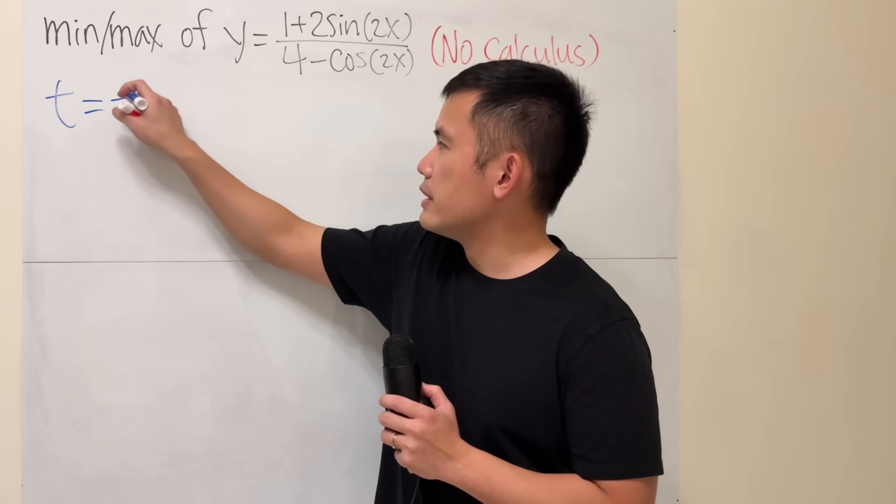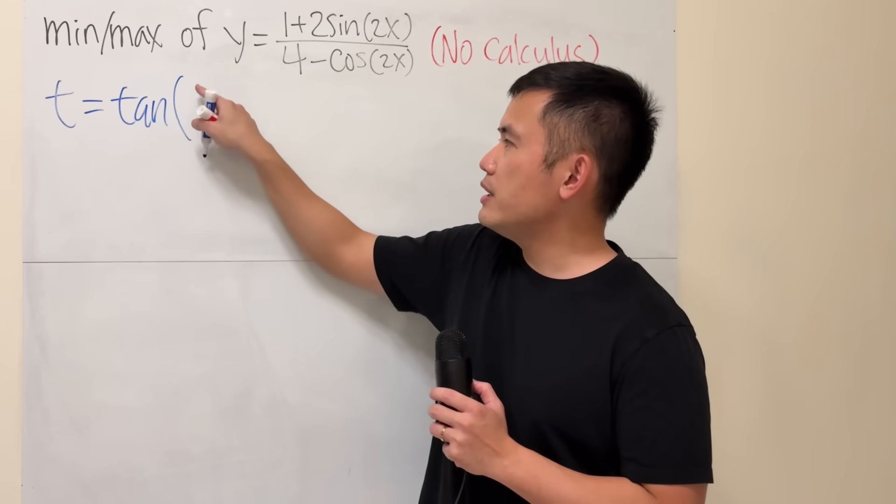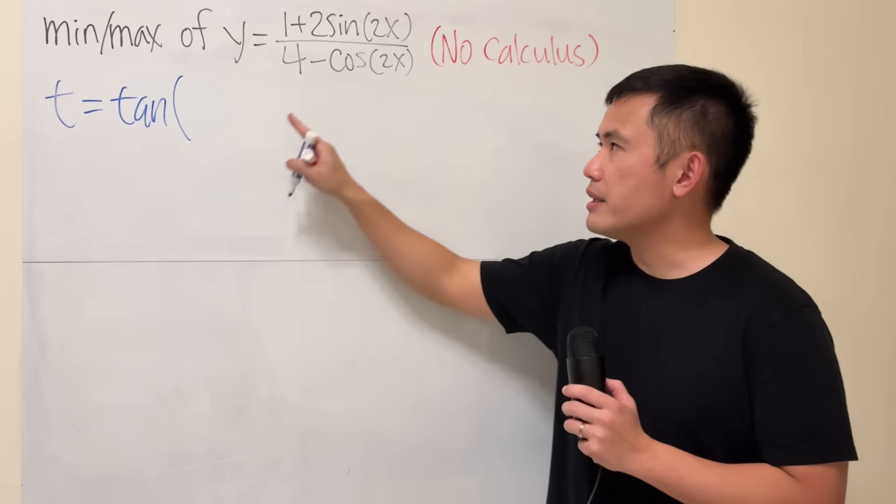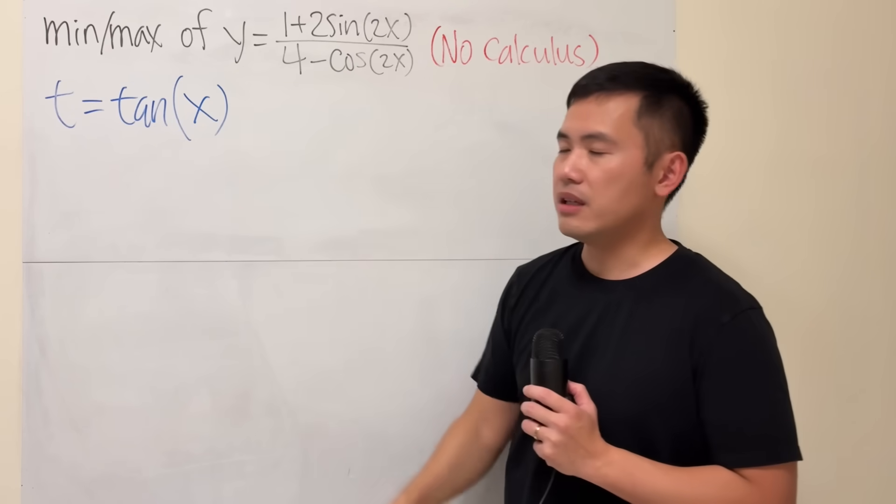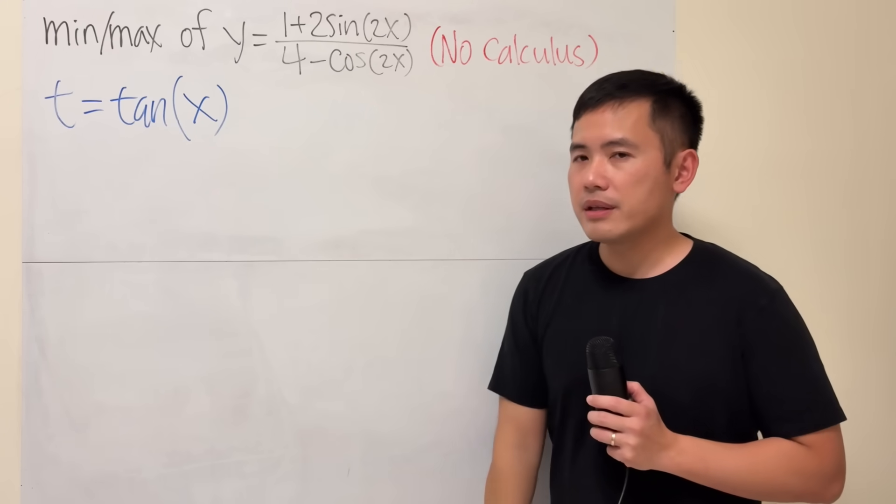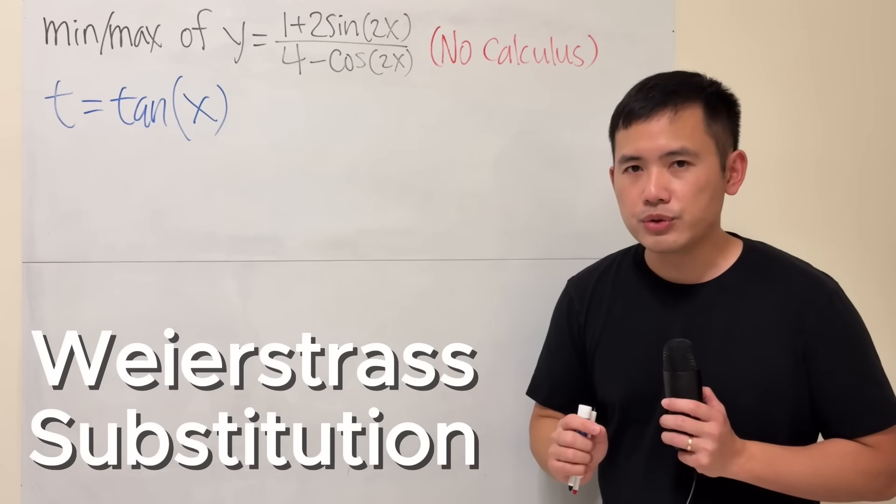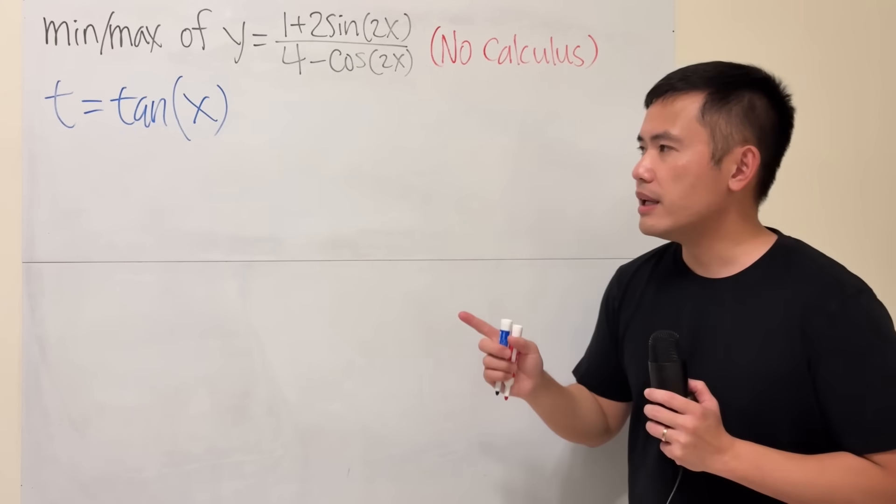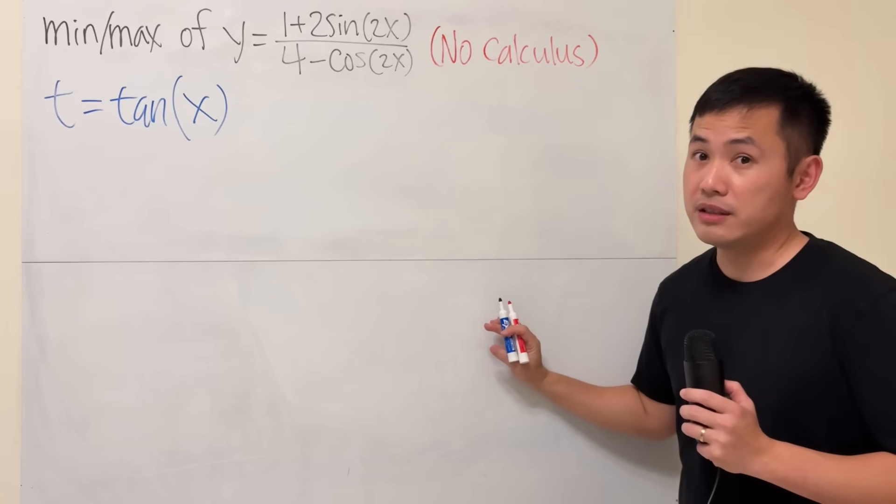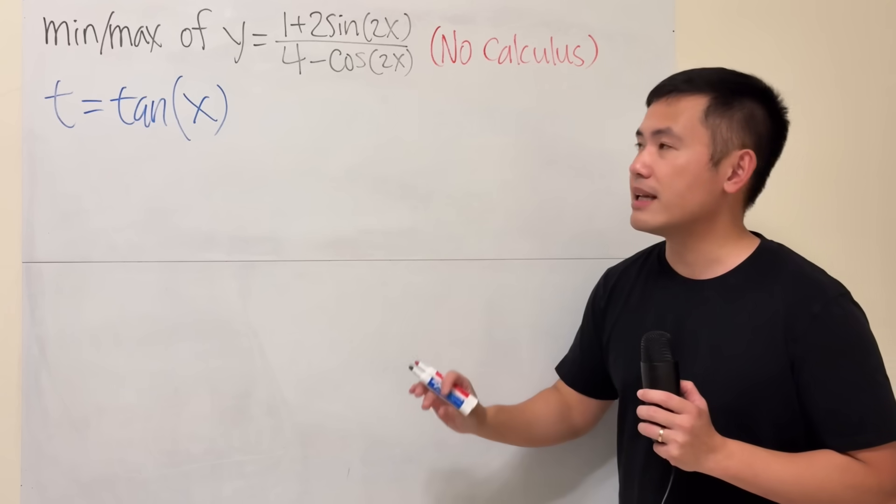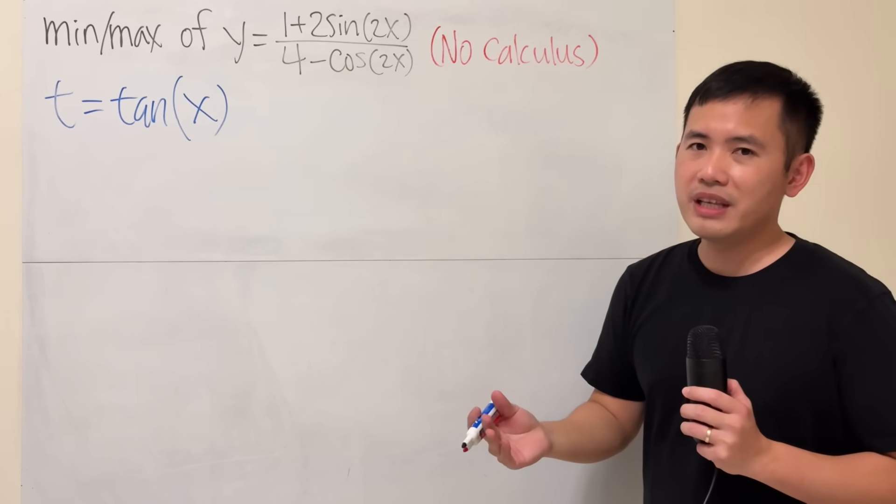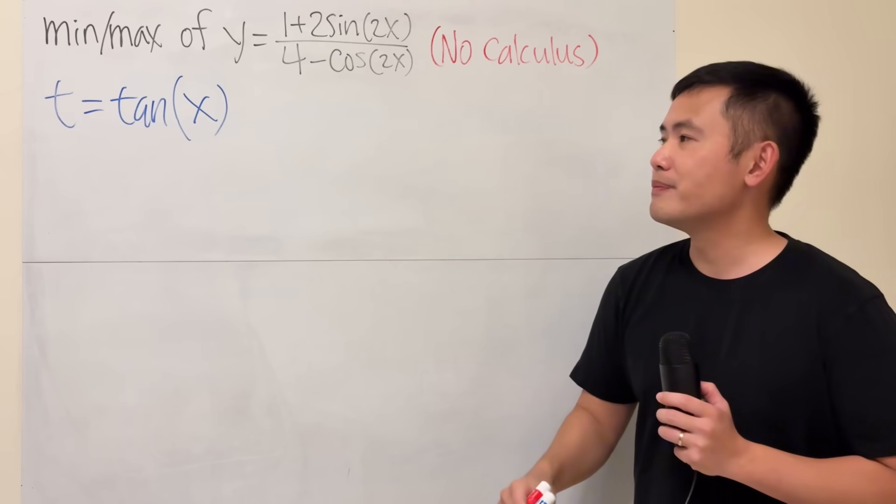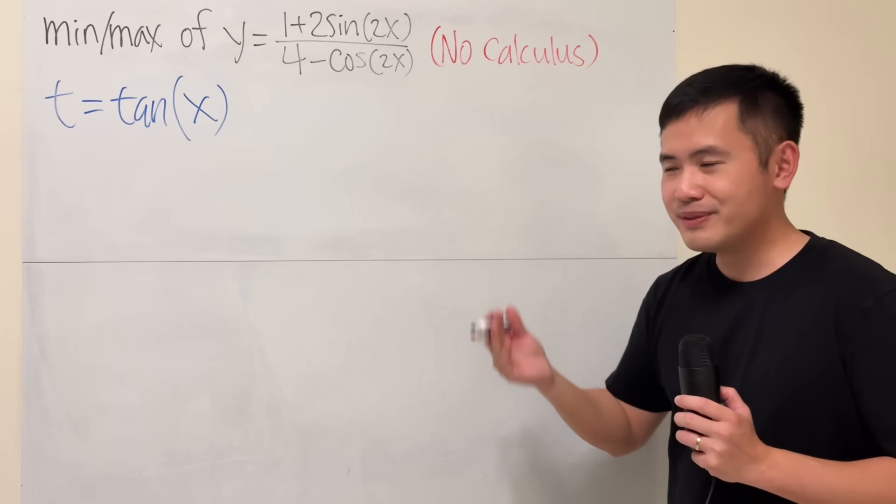You let t equal tangent, and usually it's x over 2. But here, we have 2x, so x right here is enough. This right here is called the Weierstrass substitution. If you have done some calculus integrals, then this is actually one of the integration techniques, and the purpose is just that. Once we take this into the t world, we'll just get a regular rational function, and we will have a better chance. So let's have a look.